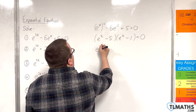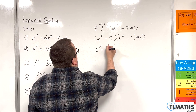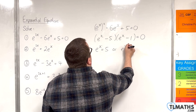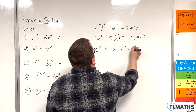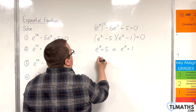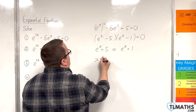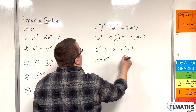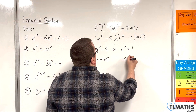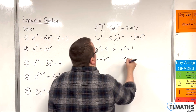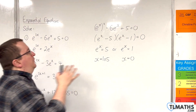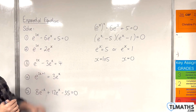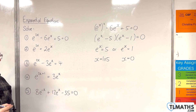So either e to the x is equal to 5, or e to the x is equal to 1. Therefore x would be the natural log of 5, or x would be equal to 0. These are the two solutions to the original problem.